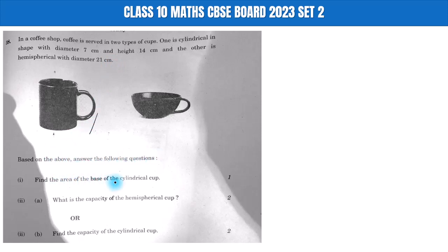Find the area of the base of the cylindrical cup. First, we will make a diagram. The diameter is 7 cm and height is 14 cm. We will find out the base area.